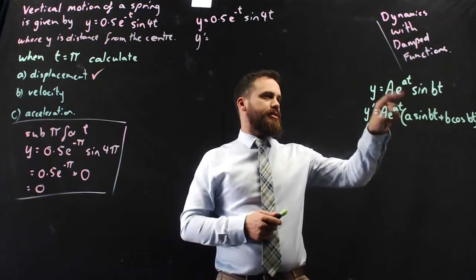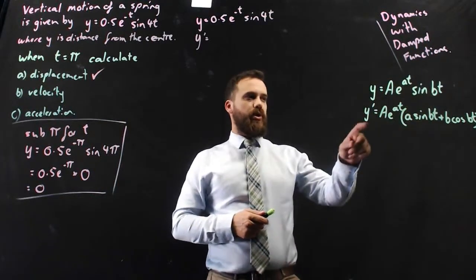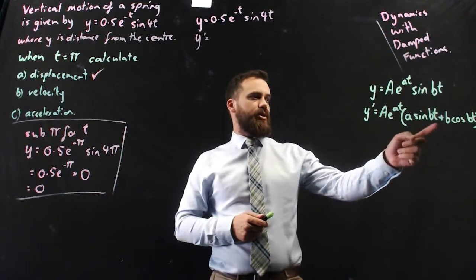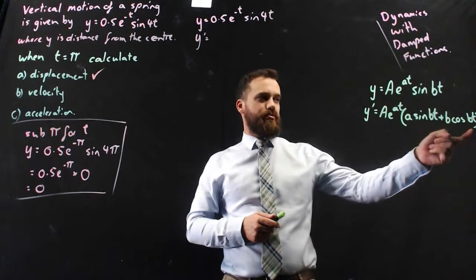So here's your sneaky formula. If y equals capital A e to the at sine bt, then y dash equals Ae to the at times a sine bt plus b cos bt.